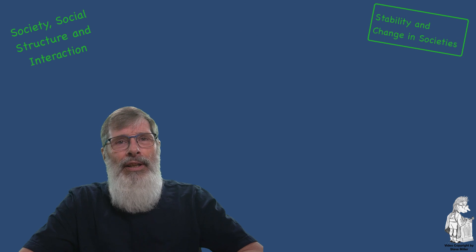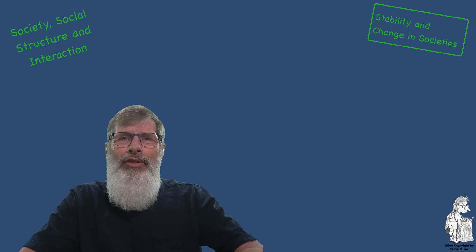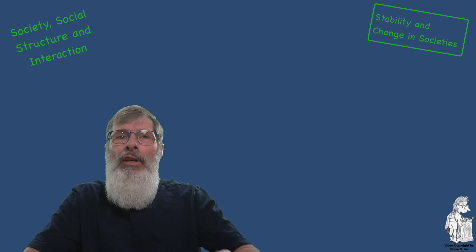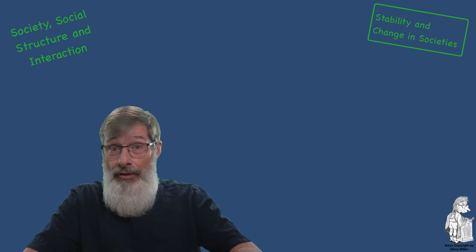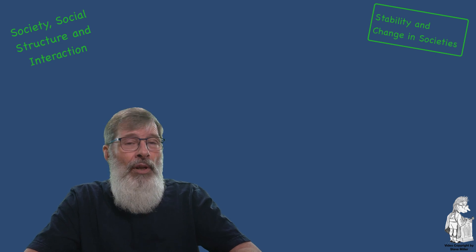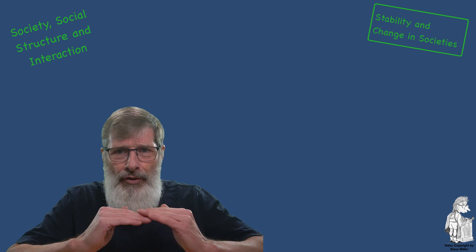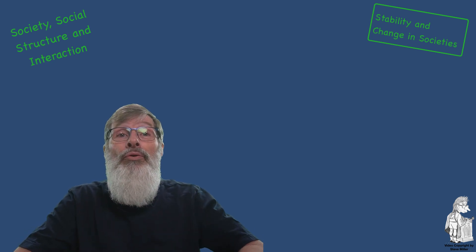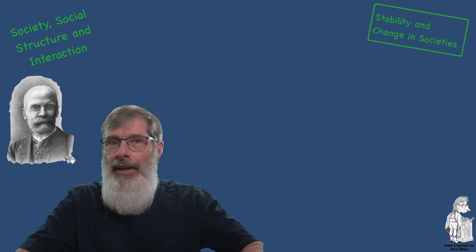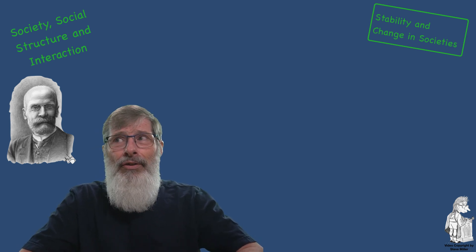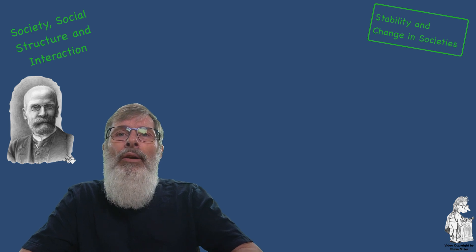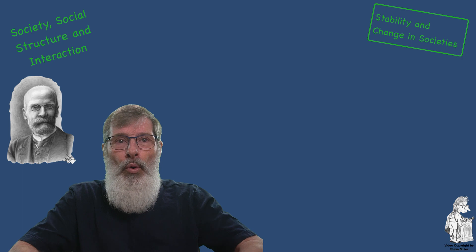Stability and change in societies. Changes in social structures have a dramatic impact on individuals and groups. Both Emile Durkheim, who came up with mechanical and organic solidarity, and Ferdinand Tönnies, who came up with Gemeinschaft and Gesellschaft, developed typologies to explain the process of stability and change in social structures. Durkheim was primarily concerned with what holds society together. Pre-industrial society was held together by strong traditions and members' shared moral beliefs and values.